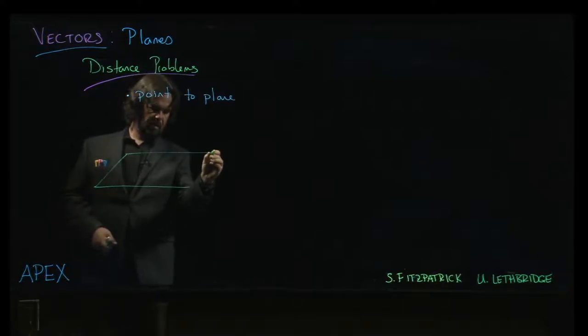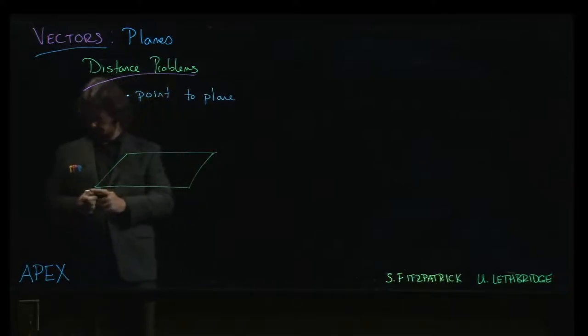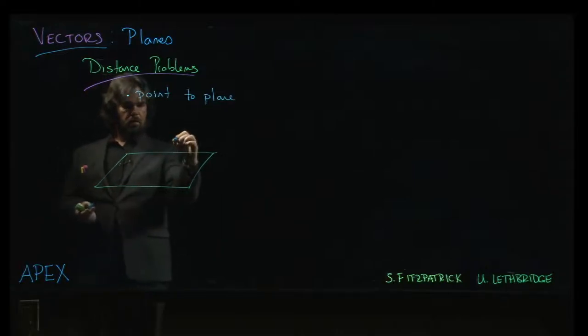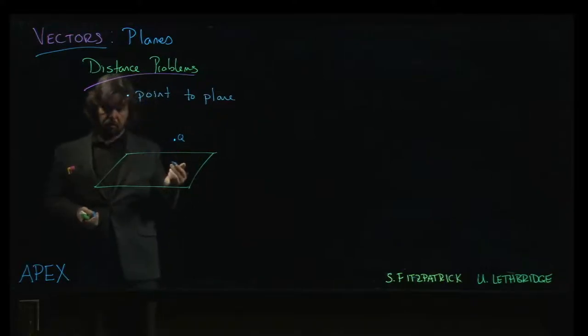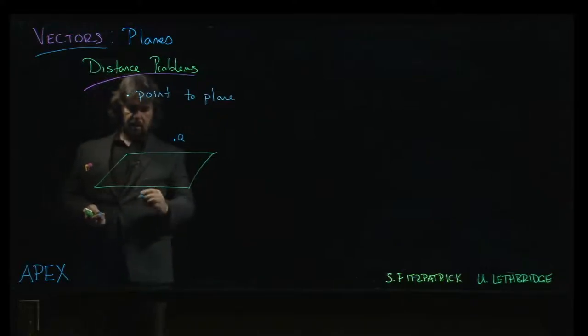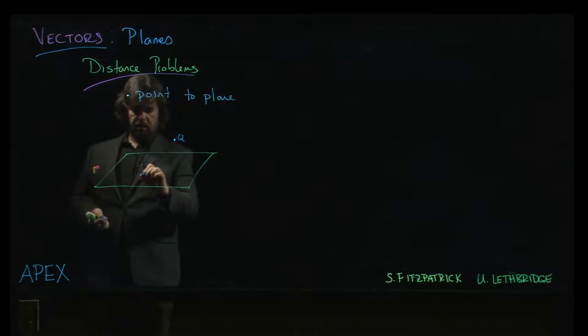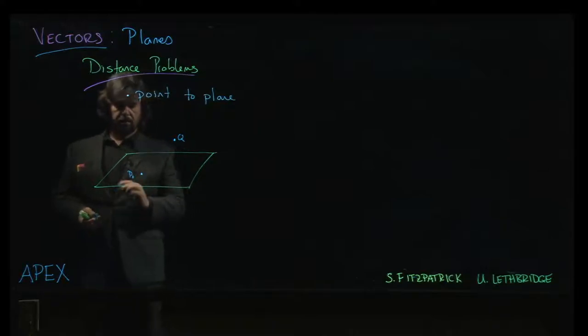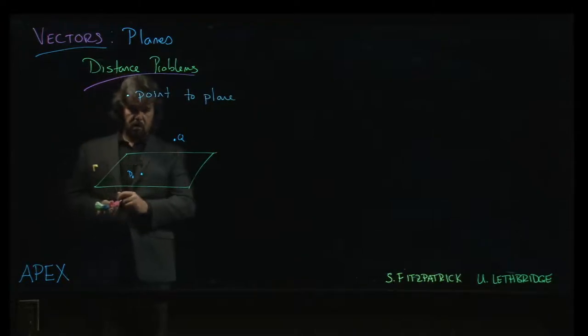Let's sketch out the schematic. Here's our plane. Here's our point. Let's call it Q, some point which is not on the plane. And so the idea is that our data that we use to define the plane typically is some point on the plane. And what? A normal vector.